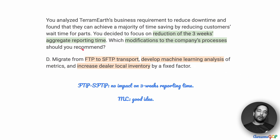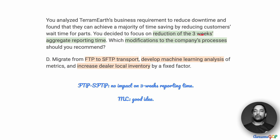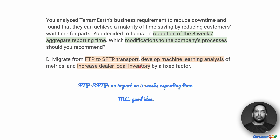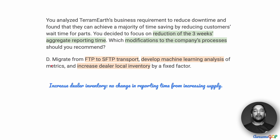How about option D? Option D suggests that we migrate from FTP to SFTP, develop machine learning analysis of the metrics, and increase dealer local inventory. We already saw FTP to SFTP has no impact on reporting time — only a slight improvement in security. Machine learning is good to have. But increasing the local inventory at dealers near the customer site is going to have no impact on the reporting time, because what we care about is the machines already in the field reporting data quickly back to the backend server. Increasing vehicles at local inventory changes nothing for the fleet. Therefore option D is not useful and we eliminate it.